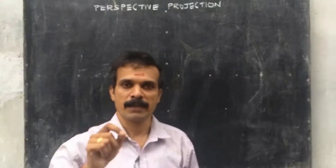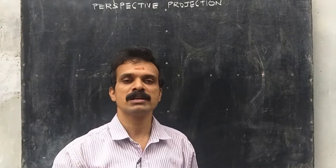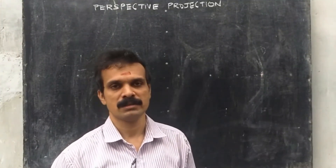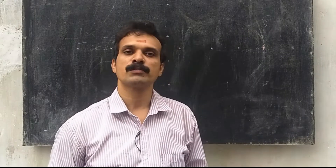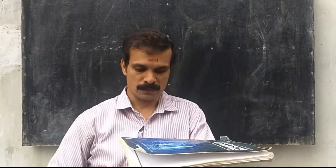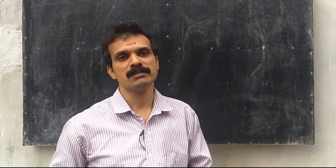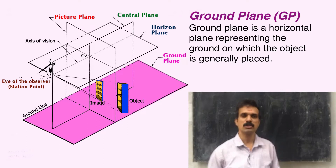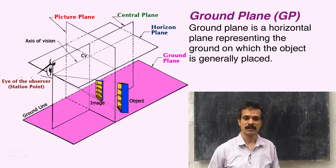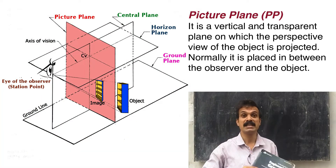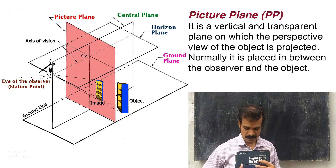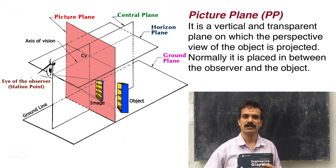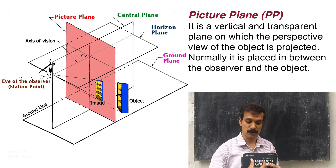Perspective projection is a projection where the observer is at a finite distance. Now, in orthographic projection we have a horizontal plane (HP) and a vertical plane. But in perspective projection, the horizontal plane or HP is known as the ground plane, and the vertical plane is called the picture plane. The picture plane is the plane where the object can be projected or seen.